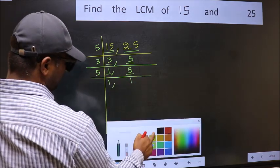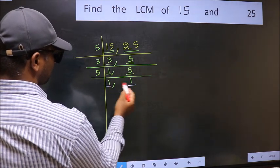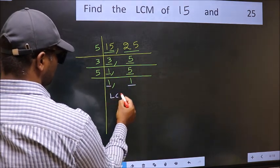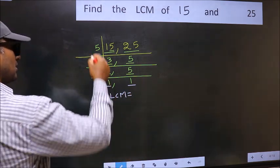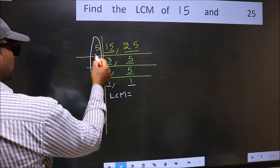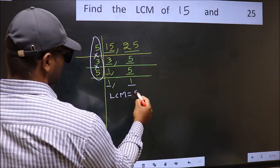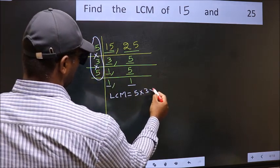So we got 1 in both the places. So our LCM is the product of these numbers. That is 5 into 3 into 5.